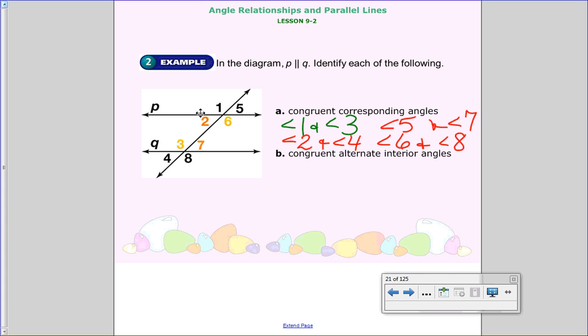And then we have congruent alternate interior angles. Well, that leaves us only 4 because they're the inside. Those are our interior. And here, they're on opposite sides. So angle 2 is the same with angle 7, and then angle 3 would be with angle 6.